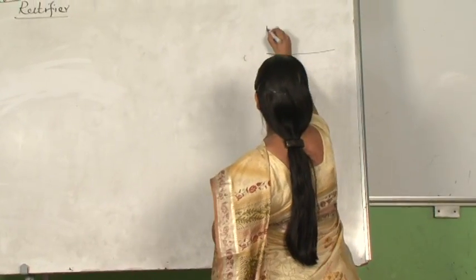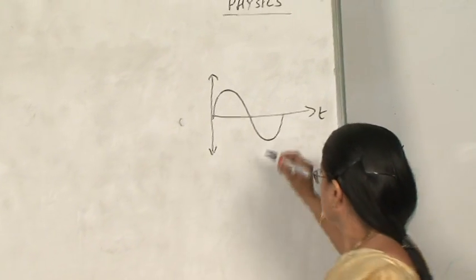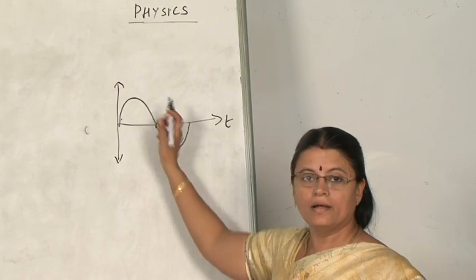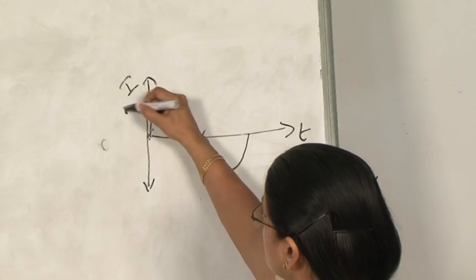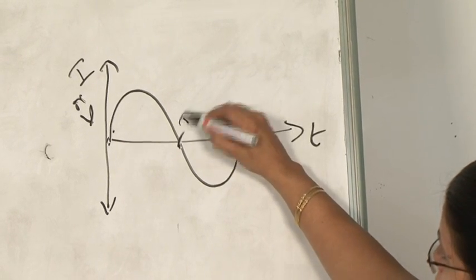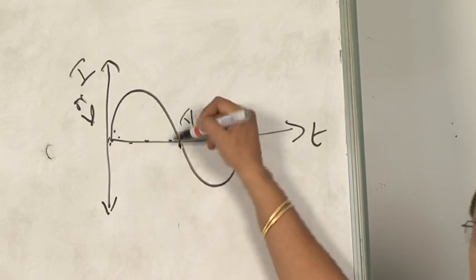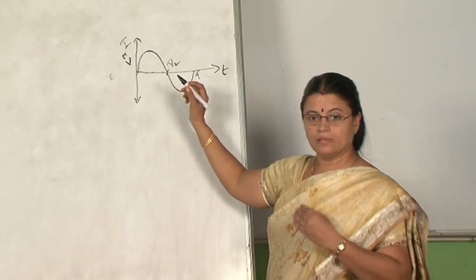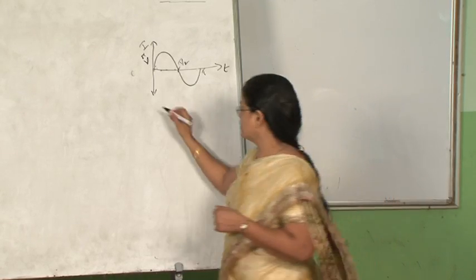We know that AC current has a change in magnitude at every instant of time, and after a regular interval of time there is a change in direction — a reversal of direction also. Such current or voltage is called alternating current or alternating voltage. This won't be of use for certain cases, so we may have to have constant amplitude current flowing in the same direction, which we know is DC.